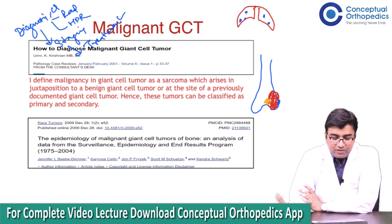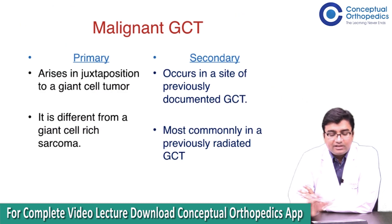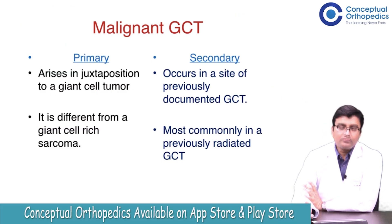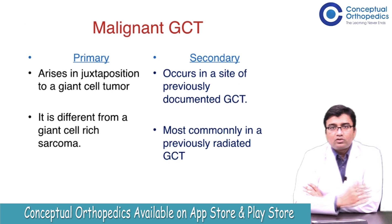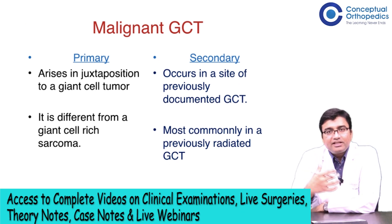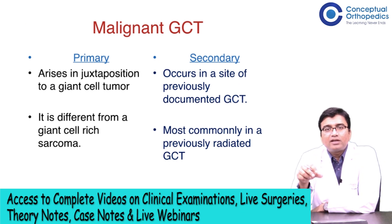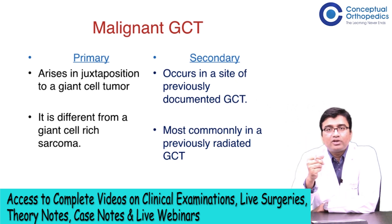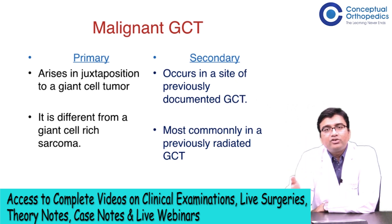Let us see what malignant GCT means — primary and secondary — and why it is important. When it is a malignant GCT, you have to treat it on the lines of a conventional sarcoma such as osteosarcoma: you have to give chemotherapy and then plan your surgery.